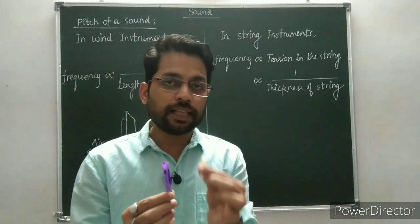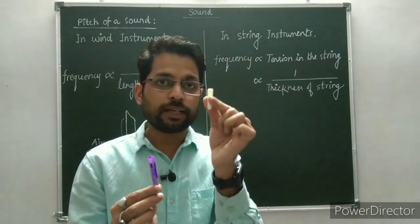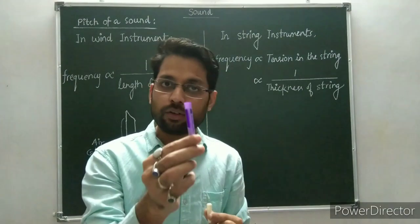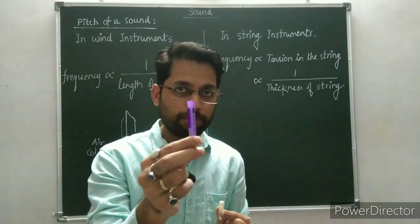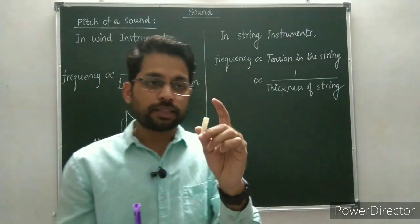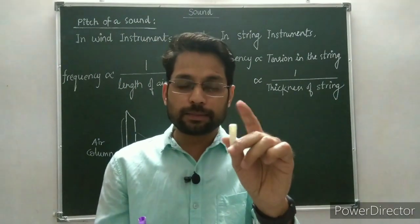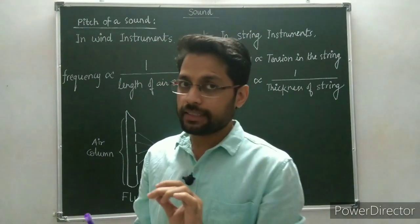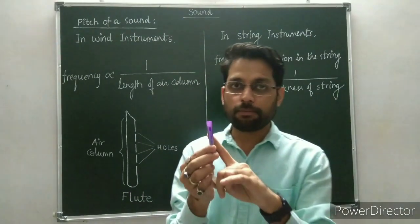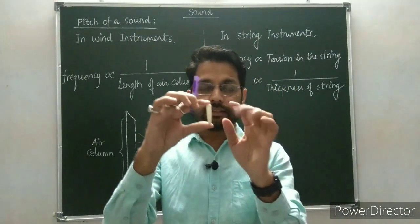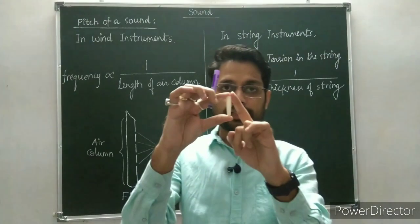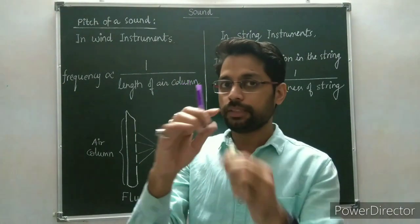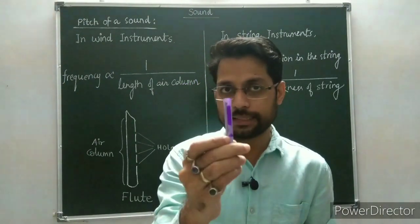We have observed that the sound produced by the smaller pipe was more shrill than that of the larger pipe. The sound from the smaller pipe was of greater frequency because it has a smaller length of air column.